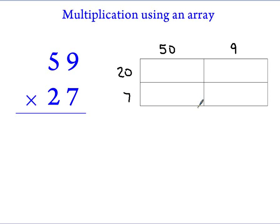We will now fill in the product for each section of the array: 20 times 50 is 1000, 20 times 9 is 180, 7 times 50 is 350, and 7 times 9 is 63.